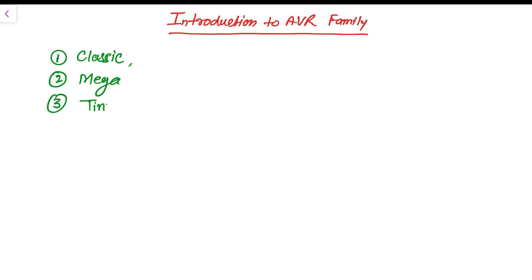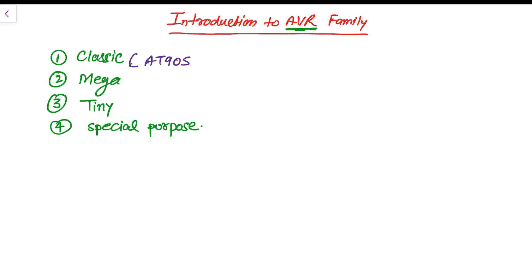In Classic AVR, the ATmega 32 has the original AVR chip, which was replaced by newer AVR chips later. We are going to first discuss the ATmega 32, 16, 8, and 64 microcontrollers. In the Classic series, names start with 80, 90, and some numbers. In the ATmega series, the name starts with ATmega followed by a number that represents the total available flash memory.